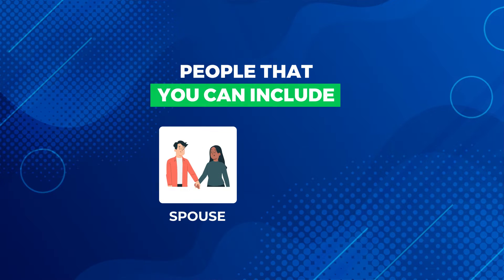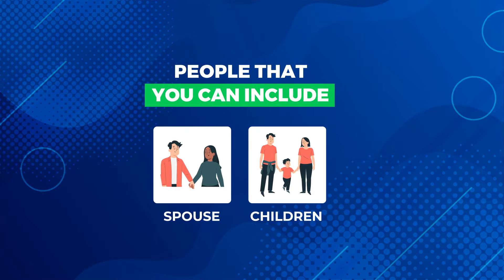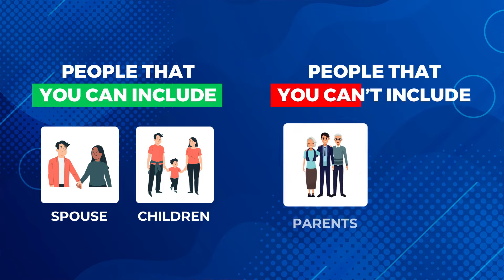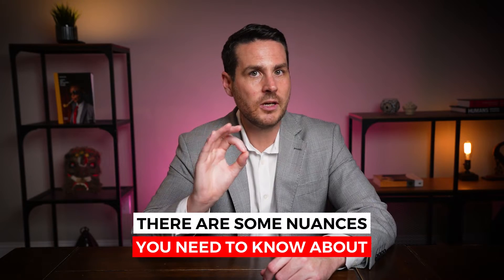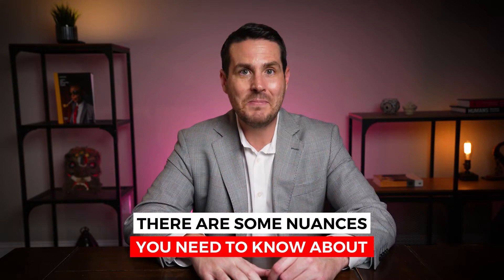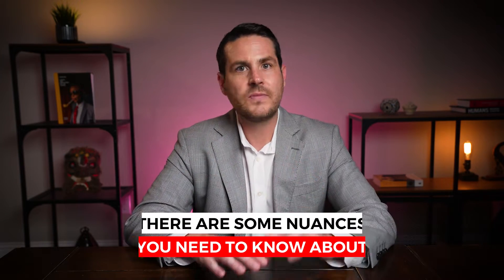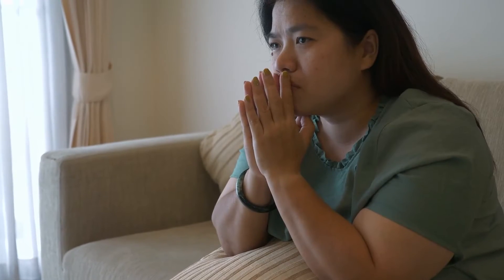As a principal applicant, you can include as dependents in your asylum case your spouse and your children. You cannot include in your case your parents, your siblings, or anyone else — just your spouse and children. But there are some nuances that apply to both categories of dependents that you need to know about. It's not as simple as it might seem at first glance, and people sometimes get tripped up thinking they can include their spouse or child as a dependent when, in reality, they don't qualify.